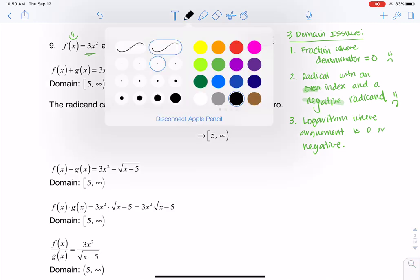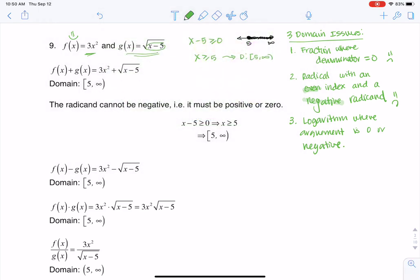All right, so when I'm adding the functions, let me go back to this color. When I'm adding the functions, if I look at my sum of those two functions, I don't have any fractions. I do have a radical, and I have no logarithms. So I need to make sure that this radicand, x minus 5, is greater than or equal to 0. So there's my domain. We had already found it.